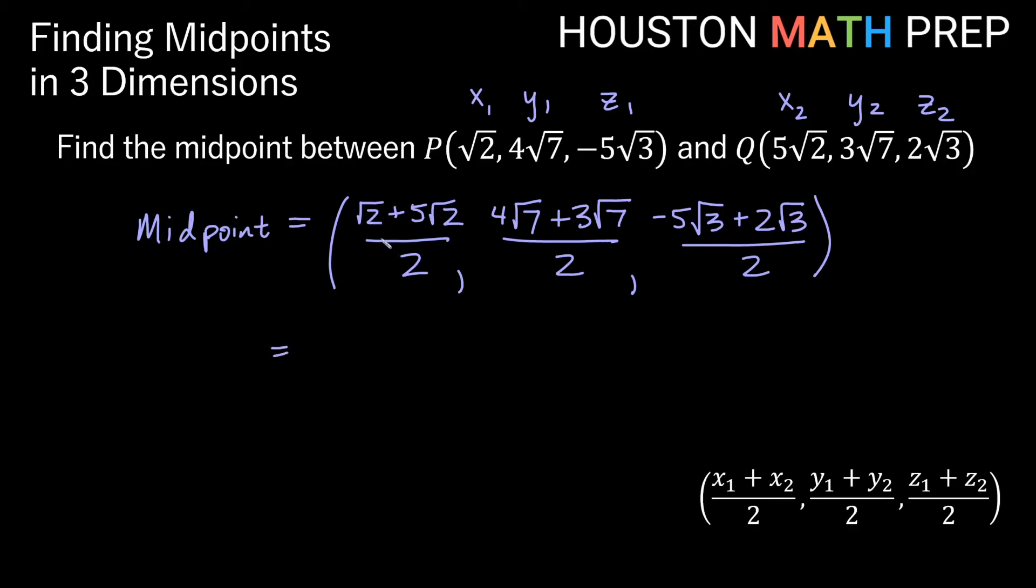And if you think about here just adding like terms, we have root 2 plus 5 root 2. That's like having a cat plus 5 cats. That's 6 cats, right? So this is really 6 root 2 on the top over 2.